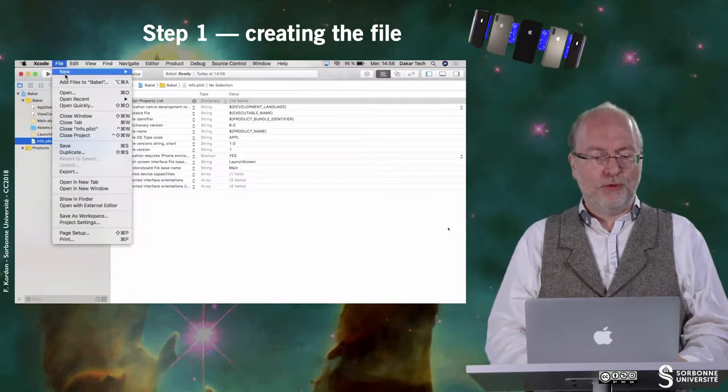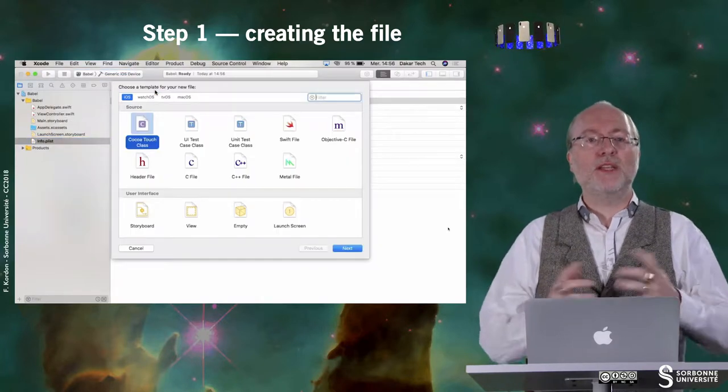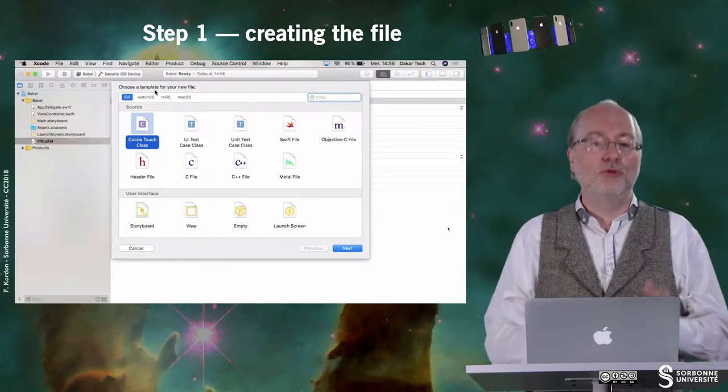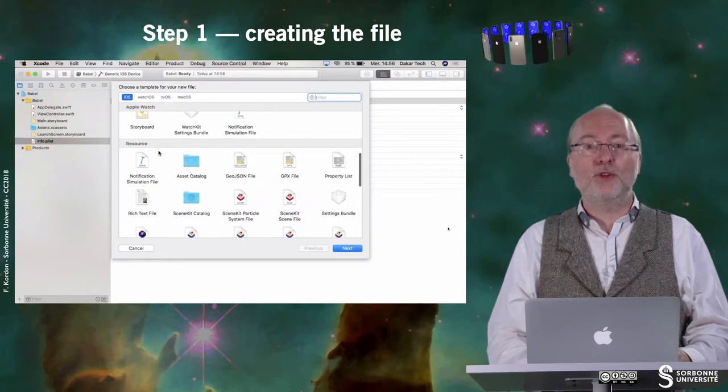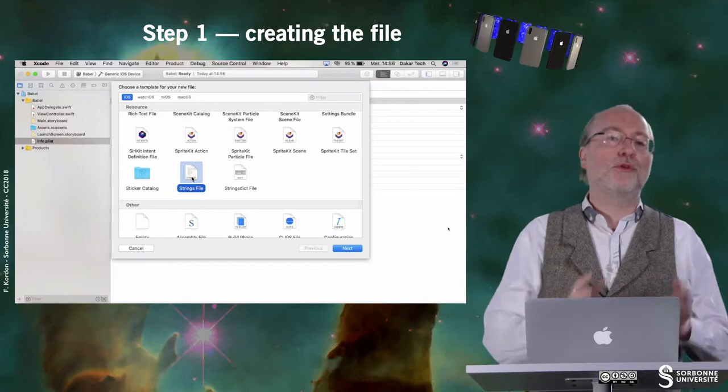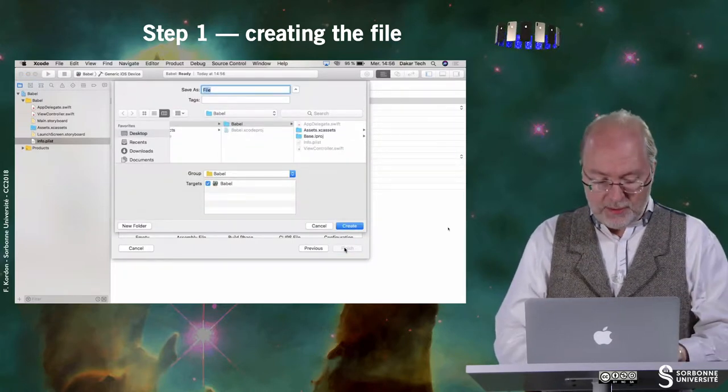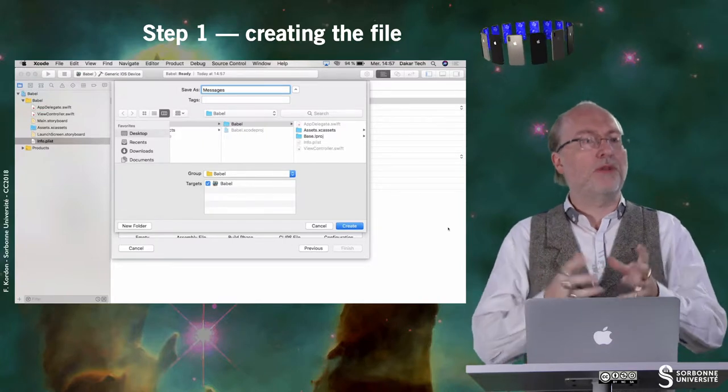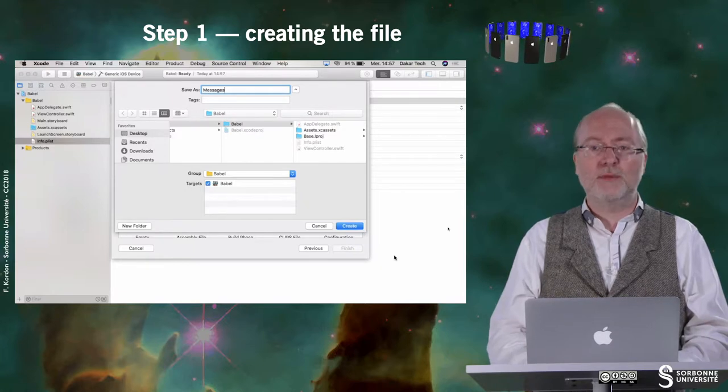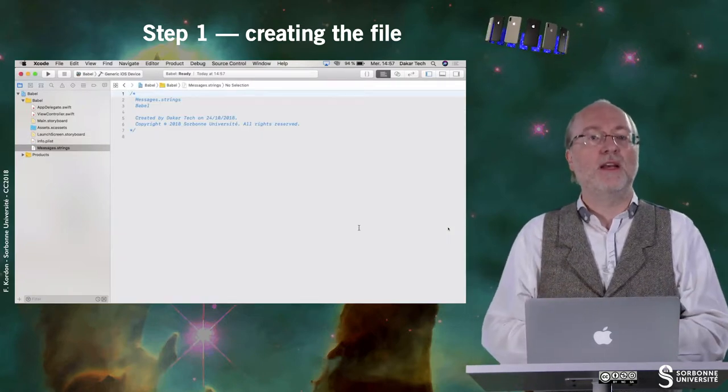So let's now create the message file. So here, I will go through a new file. So as you do for class, but here, when you get this menu, instead of choosing a Cocoa Touch class as you do usually, you will go far and you will choose a string file. In fact, you could also choose a string dict file apparently, but I'm used to the first way, so I will present you this way. So I create such a file and I call it messages.